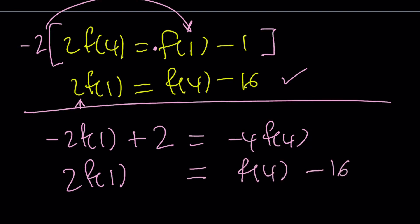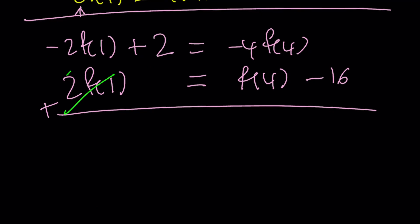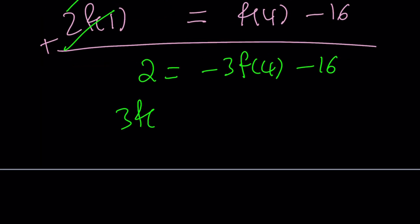Notice that by adding these equations side by side, I'm able to eliminate f of 1. And this gives me 2 equals negative 3f of 4 minus 16. If you add 3f of 4 to both sides and subtract 2, you're going to get the following. And from here, we're going to be getting the exact same solution.